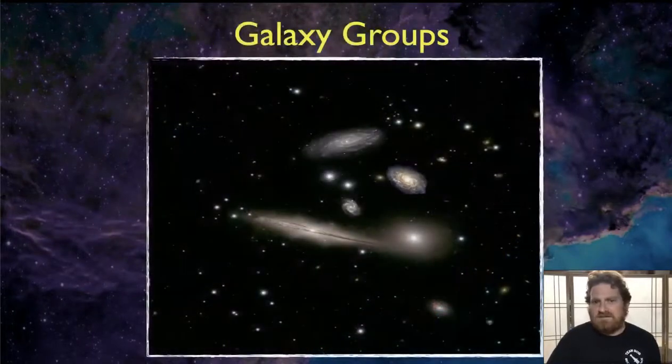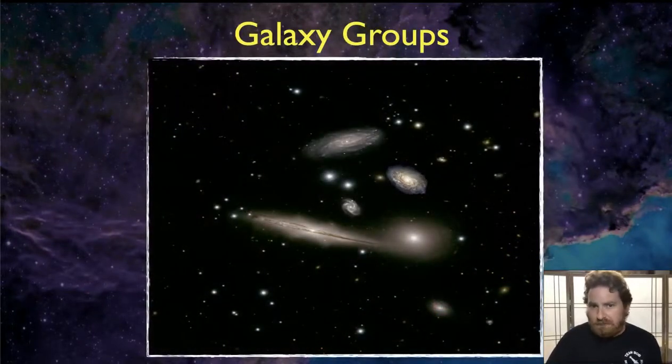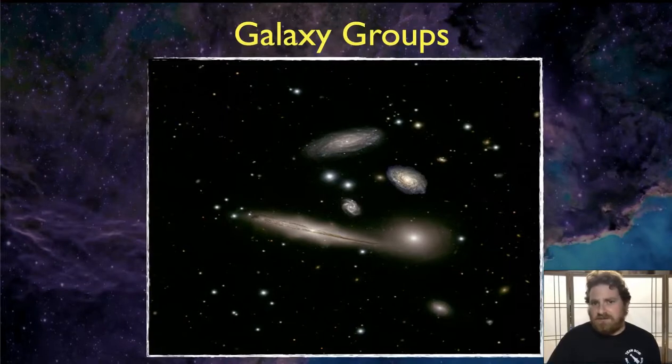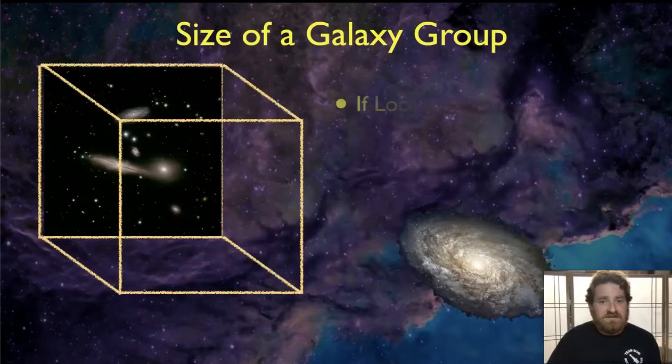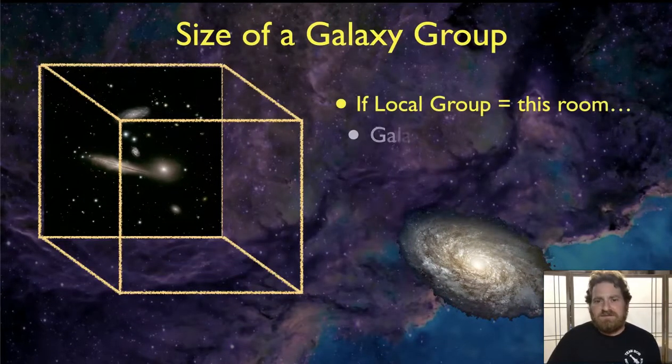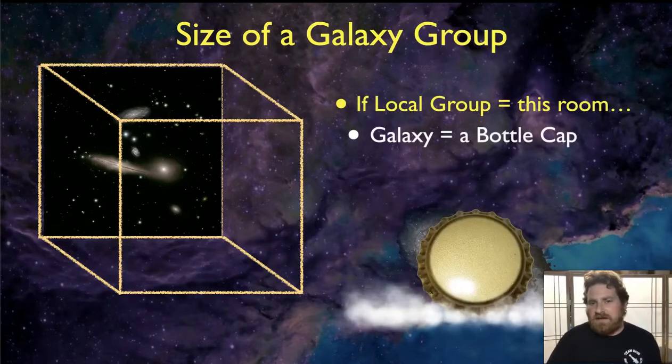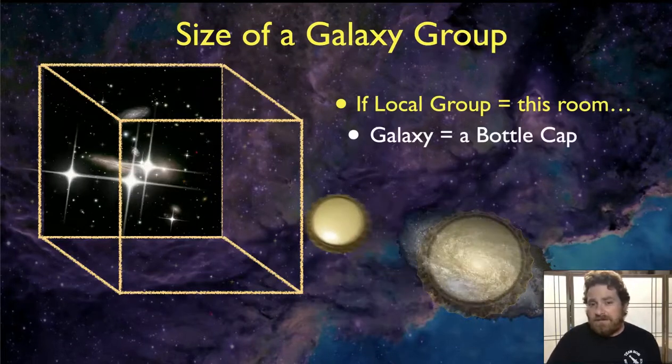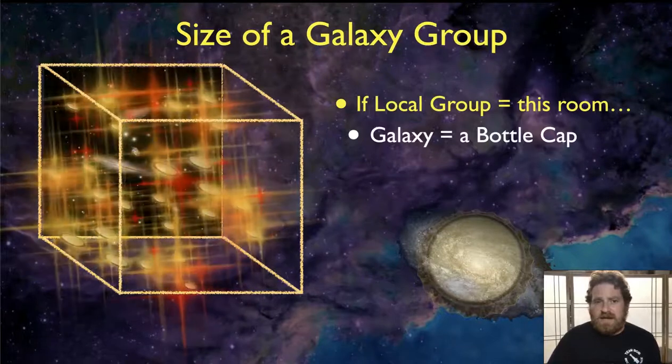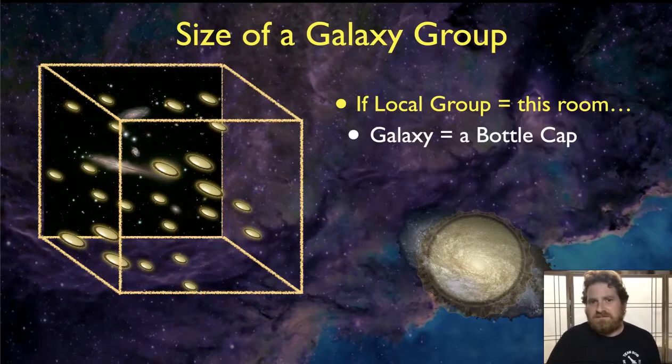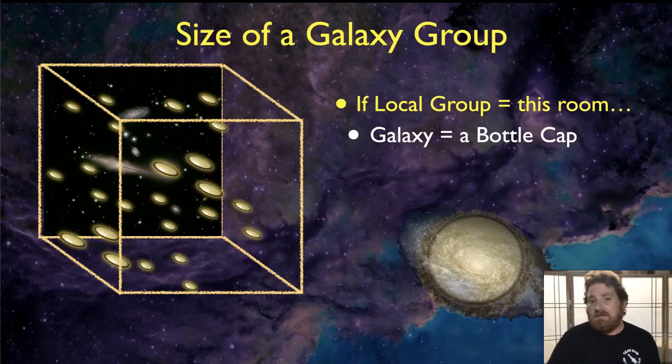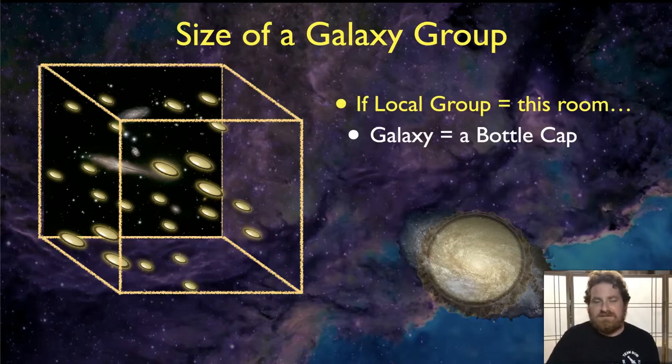Our galaxy is one of a few dozen galaxies in what we call a galactic group, all gravitationally bound to each other, slowly swarming around each other in space. And so if we were to shrink our galaxy down to fit that entire galactic group in our classroom, then each galaxy would now be about the size of a bottle cap. And you would have a bottle cap once every meter or so floating out in this room, a few dozen bottle caps floating in the room, and that would represent our galactic group, each of those bottle caps containing hundreds of billions of stars.